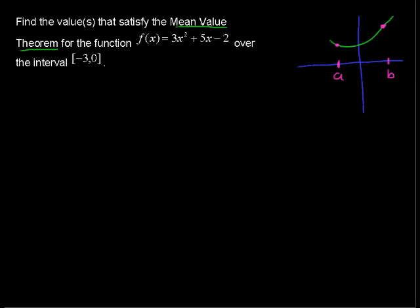We have some value f(a) — that's the function evaluated at a — and over here we have some value f(b). That's just an algebraic way of saying the y-coordinates: the function evaluated at a and b. We can draw a secant line through those points, and there will be some slope.